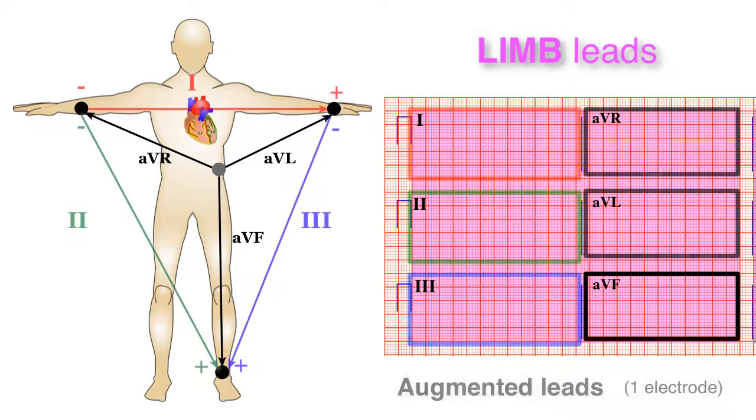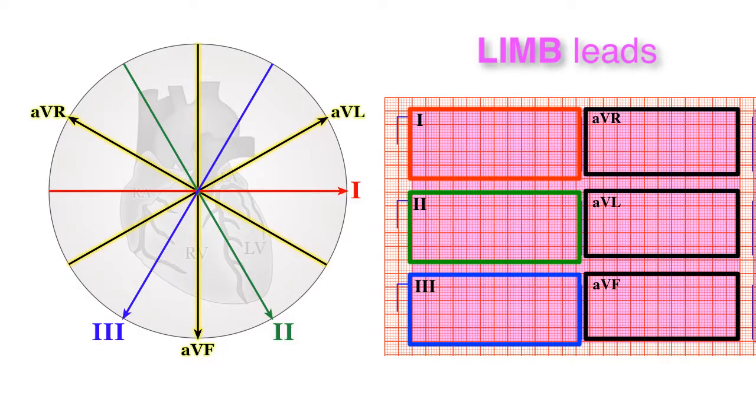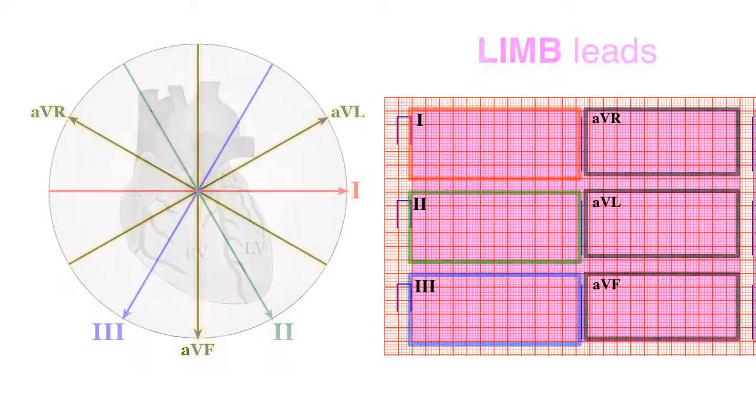These six limb leads can be rearranged into a diagram such as this one here. We'll go over this when we discuss the mean QRS axis.